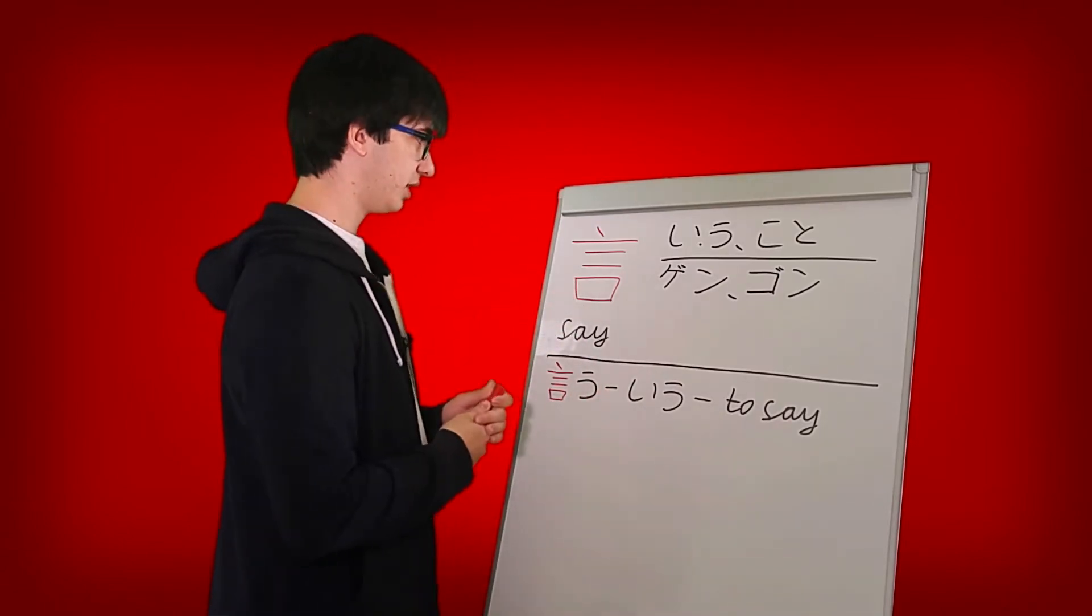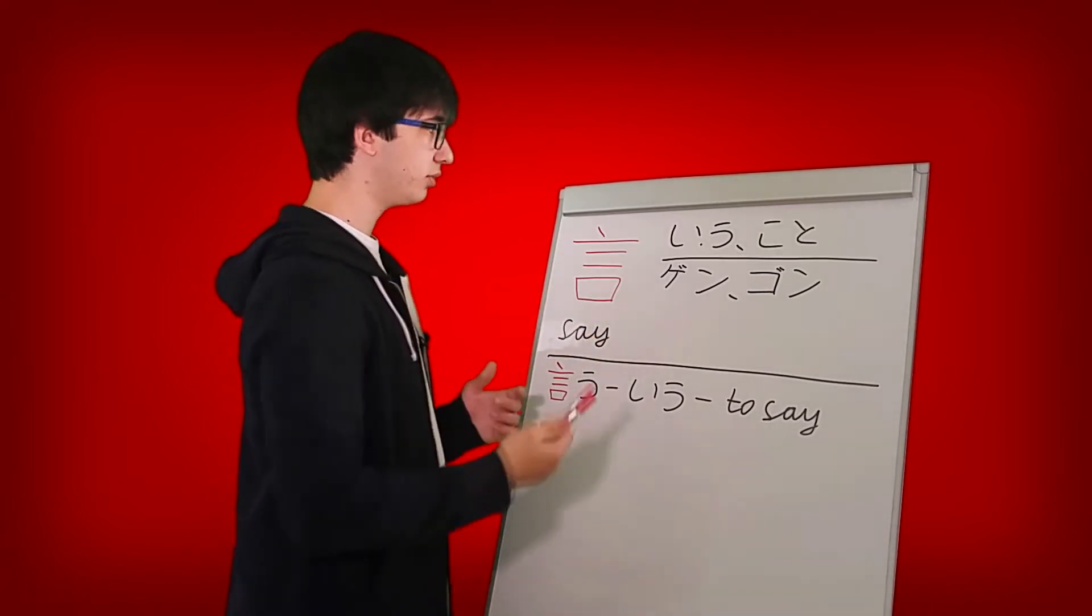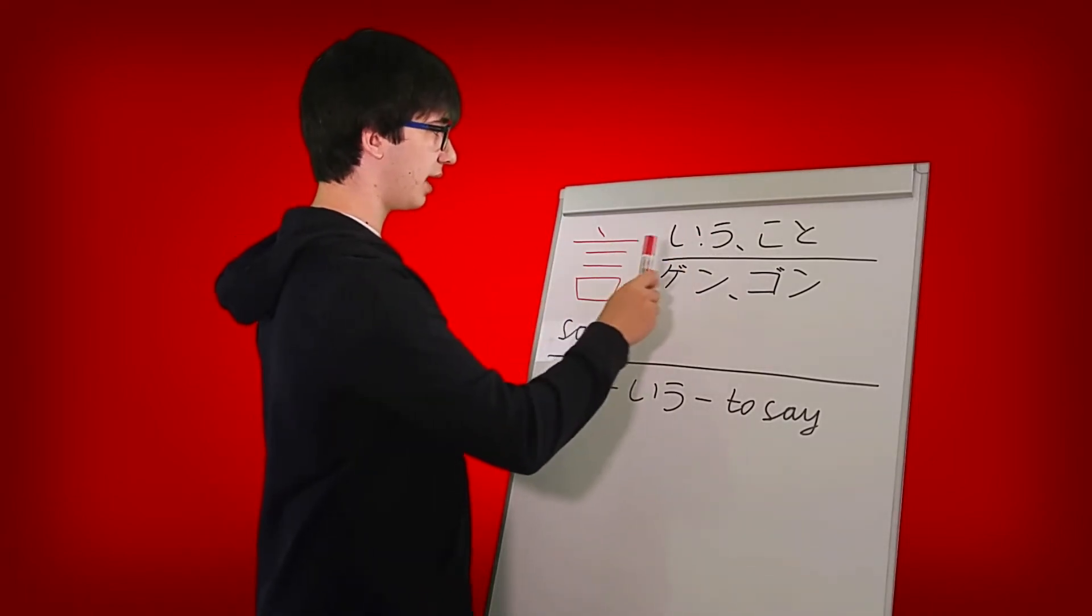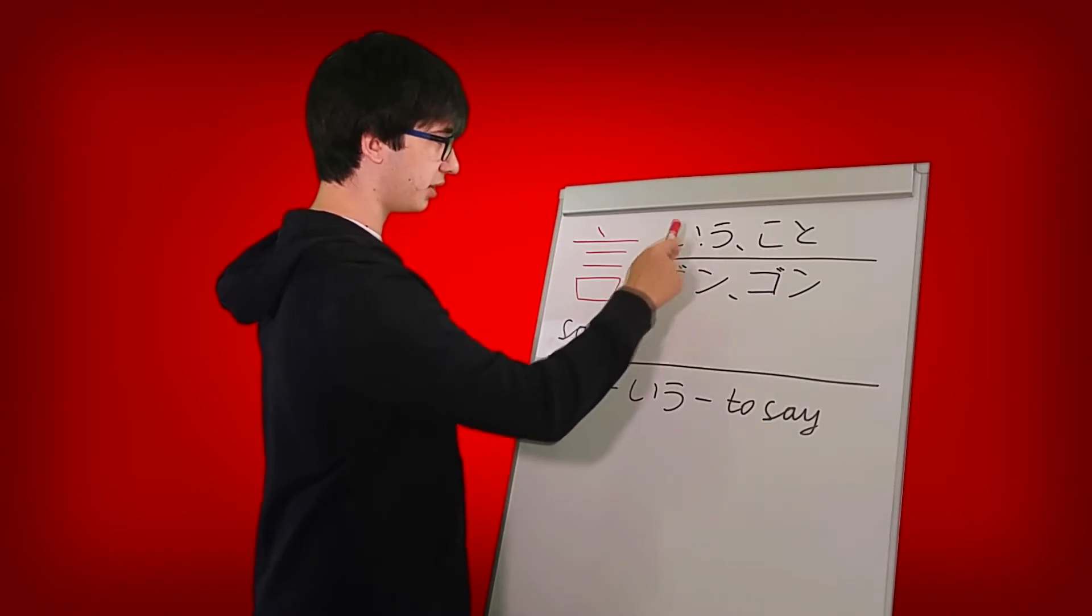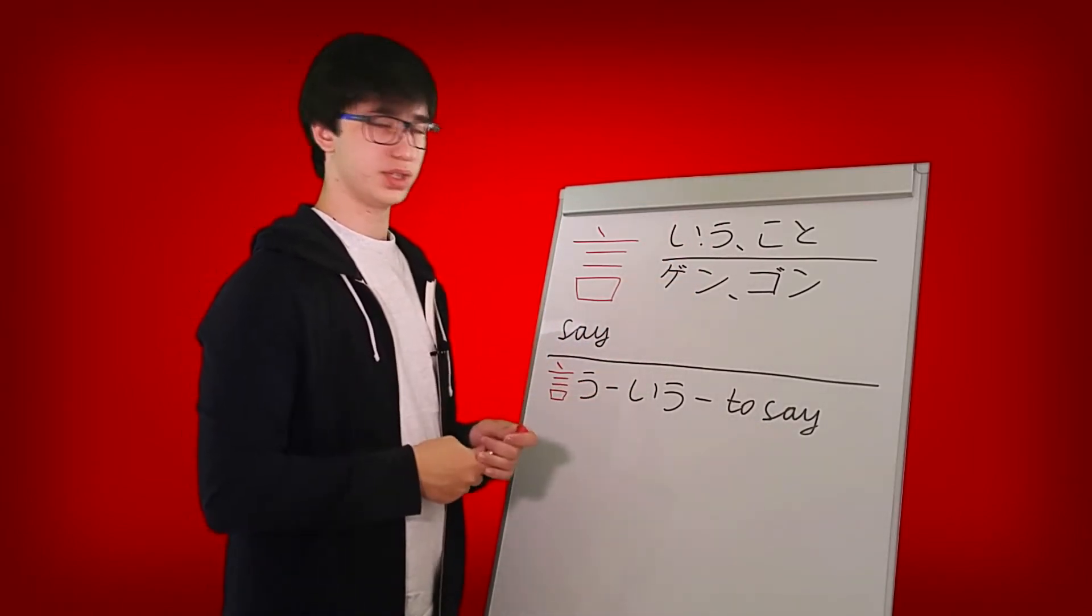This is so far the most complicated kanji that we've covered. It has seven strokes. So the kunyomi are U and here there's a dot which means that U goes outside. This will happen with all verbs in Japanese.